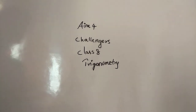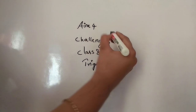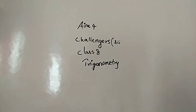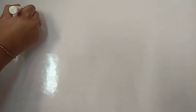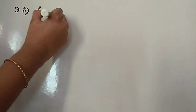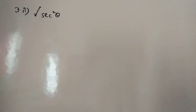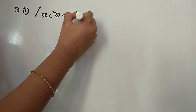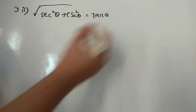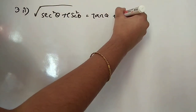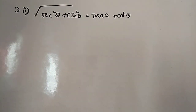Hi everyone, welcome to Vishwa Problems. In this video we will be looking at aim for challenges from the third bit, second question onwards. We have to consider the third bit second one. We have to show that the square root of secant squared theta plus cosecant squared theta is equal to tan theta plus cot theta, where theta is acute.